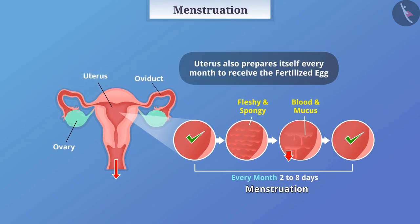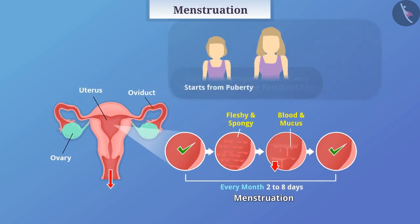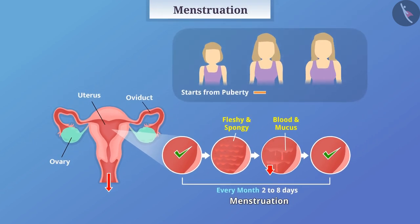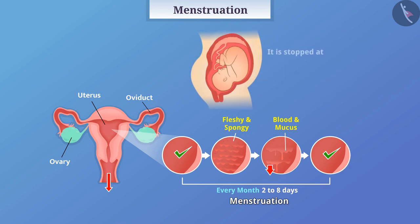The cycle of menstruation starts from puberty and continues till the age of 45 to 55. It is stopped during pregnancy. This process is controlled by hormones.